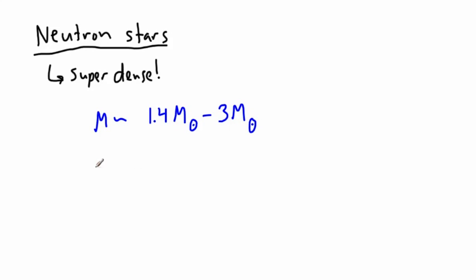And yet, the size of a neutron star is actually quite small. It's on the order of kilometers, so maybe something like 12 kilometers. When we look at density, density is mass divided by volume.